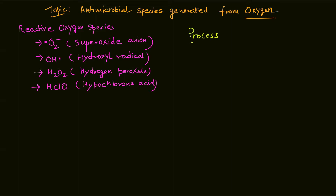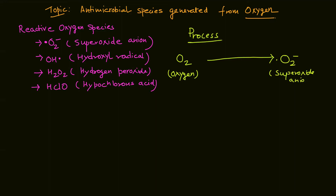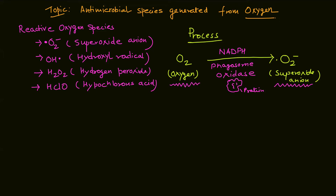In short, ROS. The process of synthesis of these species starts with the oxygen molecule, O2. The first step is the production of superoxide anion. The formation of superoxide anion is performed by NADPH phagosome oxidase — it's an enzyme, a protein. The oxygen converts to superoxide anion in the presence of this enzyme.